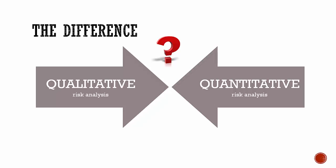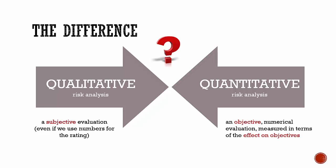Here is the difference. Qualitative risk analysis is a subjective evaluation even if we use numbers for rating. In contrast, quantitative risk analysis is a more objective numerical evaluation which is calculated and measured in terms of the effect on project objectives.